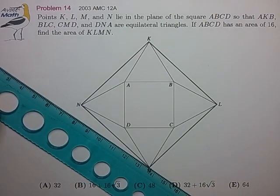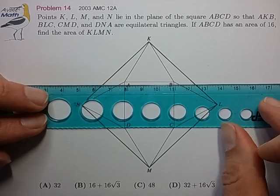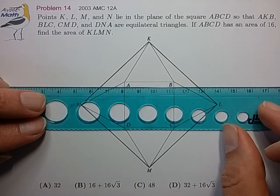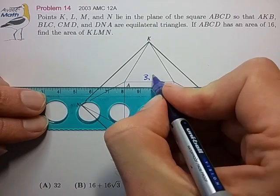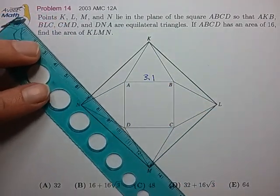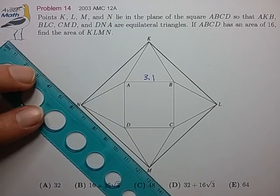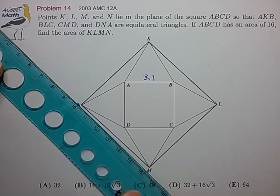So let's try to measure some of the lengths on this figure. Let's take a look at the length of the inner square. It looks like it's 3.1 centimeters in length, and let's take a look at the length of the outer square. It looks like it's exactly six centimeters.